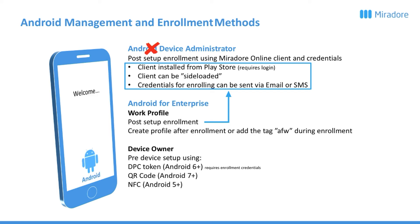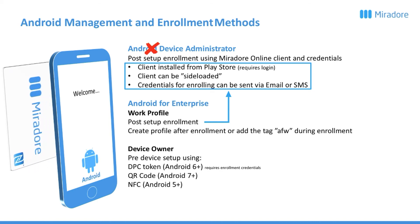Last but not least, we have NFC enrollment, available from Android 5 and newer. This is by far the simplest and easiest way to get an Android device enrolled into Mirador Online. The only thing required is either a phone ready to beam the NFC enrollment — we have separate instructions for that — or you could prepare an NFC card for enrollment. At the welcome screen, you introduce the NFC card to the back of the phone and that will start the enrollment process.